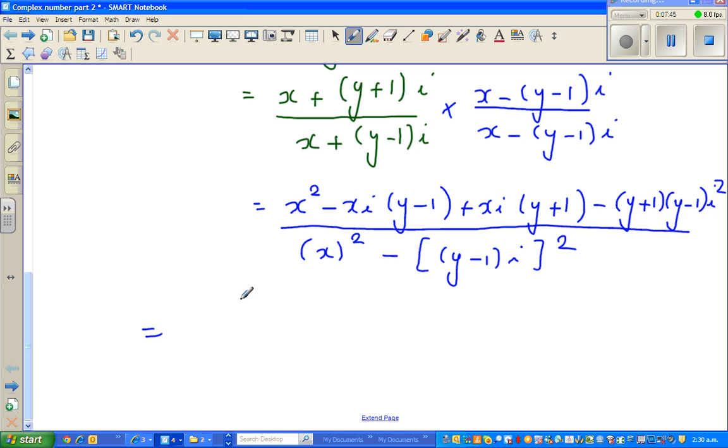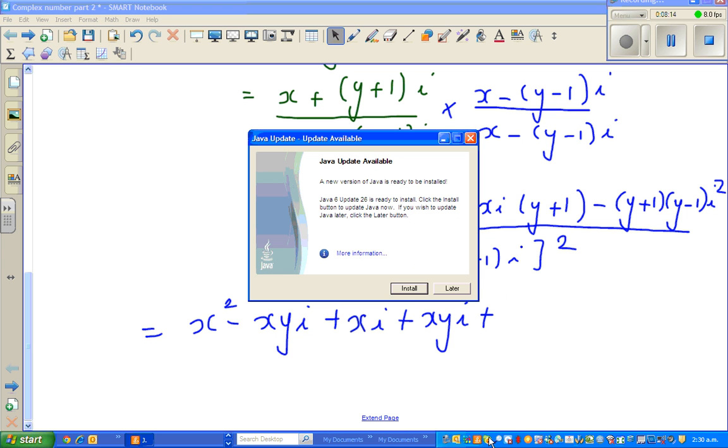This equals x² - xyi + xi + xyi. I'm going to expand now. The denominator becomes x² minus... let me continue expanding the numerator: x² - xyi + xi + xyi + (y + 1)(y - 1).